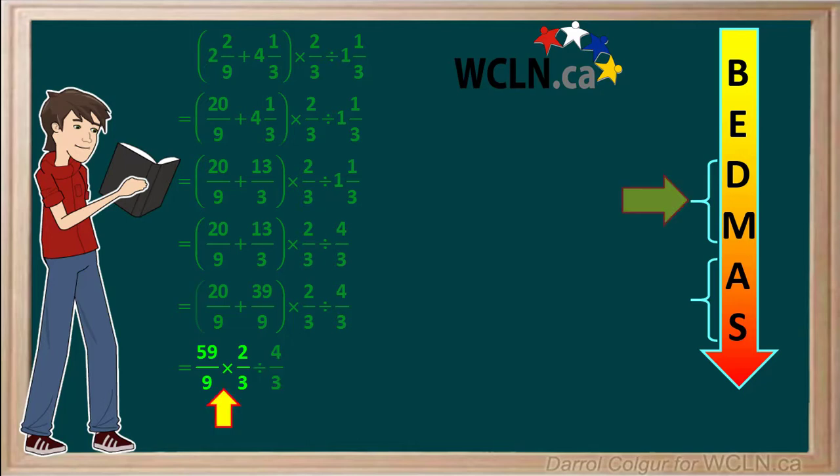Our question starts with the multiplication 59 over 9 times 2 thirds. 59 times 2 is 118, and 9 times 3 is 27. So the product is 118 over 27.